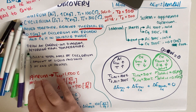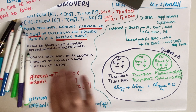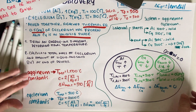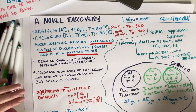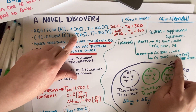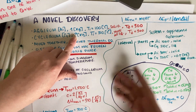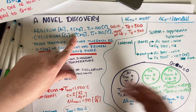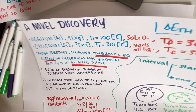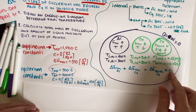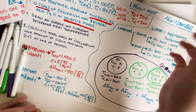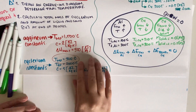For part B, we need to calculate the total mass of cyclerium and the amount of liquid and solid at the end of the process. The problem never gave us the total mass of cyclerium — it only says 0.5 kilograms ended up frozen. The total could have been 5, 10, or 20 kilograms. We need to find it using our equation.